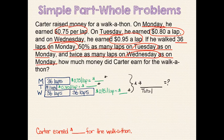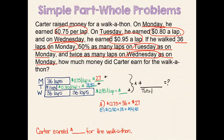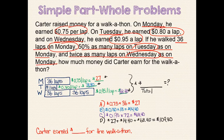We can go ahead and calculate how much Carter earned each day. On Monday, he earned $0.75 a lap times 36 laps, which equals $27. On Tuesday, he earned $0.80 a lap times 18 laps, which equals $14.40. On Wednesday, he earned $0.95 a lap times 72 laps, which equals $68.40. The final step is to add each day's totals: $27 plus $14.40 plus $68.40 equals $109.80. Carter earned $109.80 for the walk-a-thon.